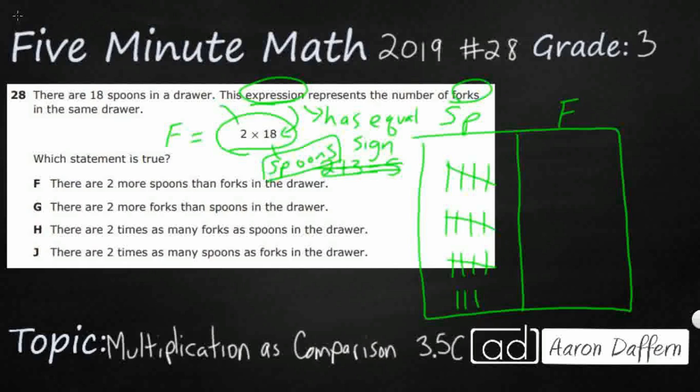So there are two more spoons than forks in the drawer. So two more spoons than forks. So if we were going to take our spoons, that's going to equal our forks plus 2. So our spoons, and we know our spoons are 18. So let's just do this. Let's just say 18. Our spoons are 18, and that's going to equal F plus 2. Well, maybe.